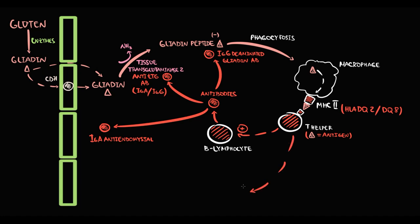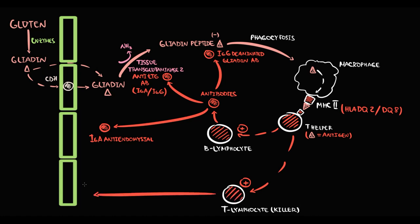With activation, T-helpers stimulate T-killers, which in response infiltrate the mucous membrane, particularly the epithelium. Lymphocytes in the epithelium are called intraepithelial lymphocytes. Intraepithelial lymphocytes begin to destroy the mucous membrane of the duodenum, resulting in villus atrophy.